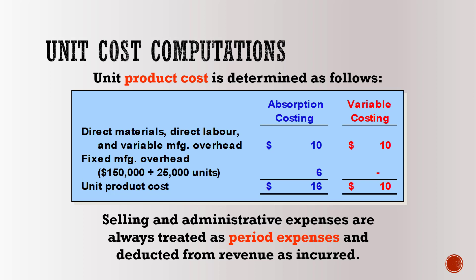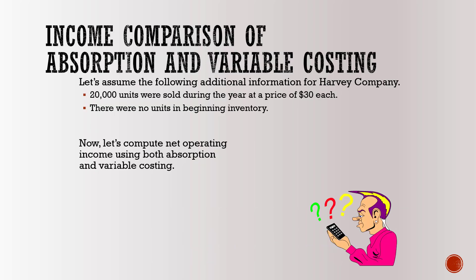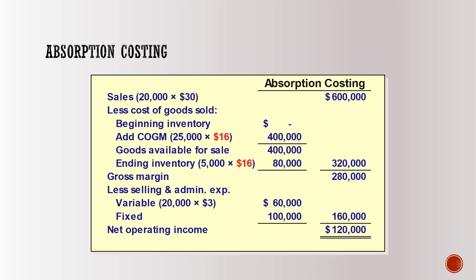Let's assume the additional information for the hardware company: 20,000 units were sold during the year at a price of $30 each, and there were no units in beginning inventory. Under absorption costing, net operating income is $120,000. The cost of goods manufactured is 25,000 units multiplied by $16 per unit, and ending inventory of 5,000 units is multiplied by $16 per unit.